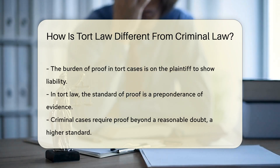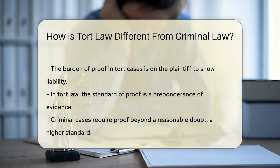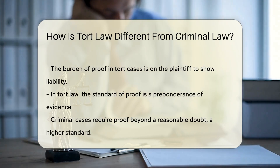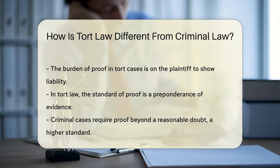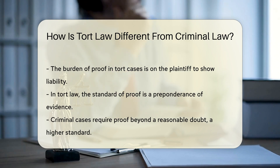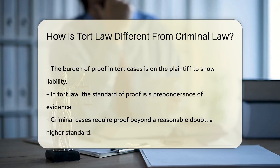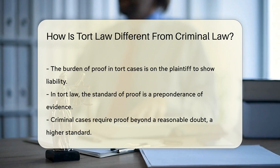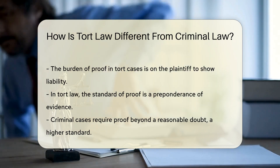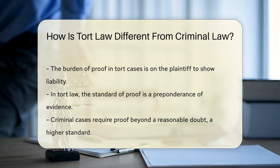The burden of proof differs significantly between the two. In tort cases, the plaintiff must show that the defendant is liable for damages, usually by a preponderance of evidence. Criminal cases require proof beyond a reasonable doubt, placing a higher standard on the prosecution.